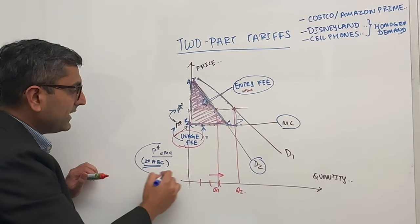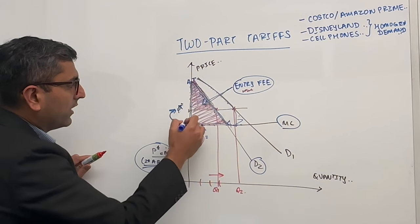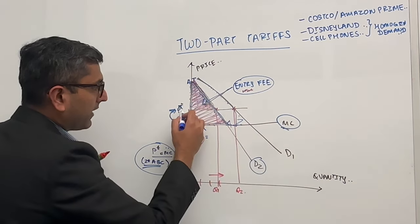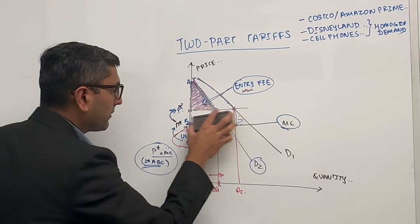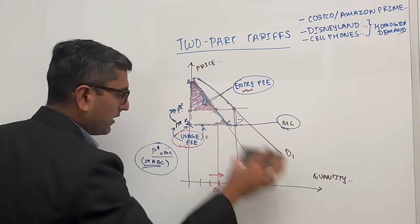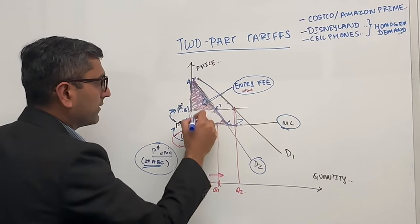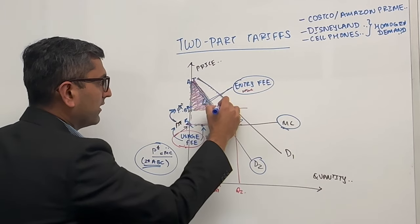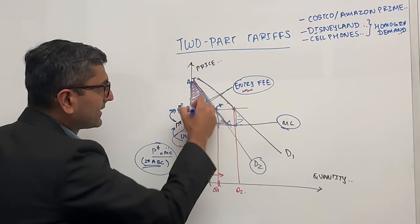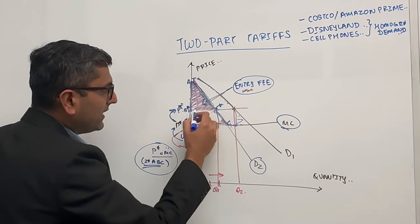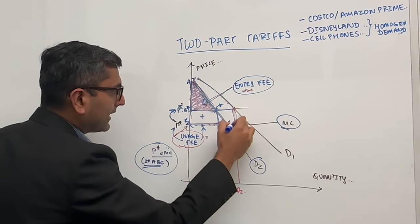But we can increase the producer surplus if we increase the price from p star from not equal to mc but higher than mc. So if we were to give up this producer surplus and charge just this surplus A B star B star C star, then we can now charge entry fee as this triangle. But then we can charge usage fee as this rectangle plus this rectangle.